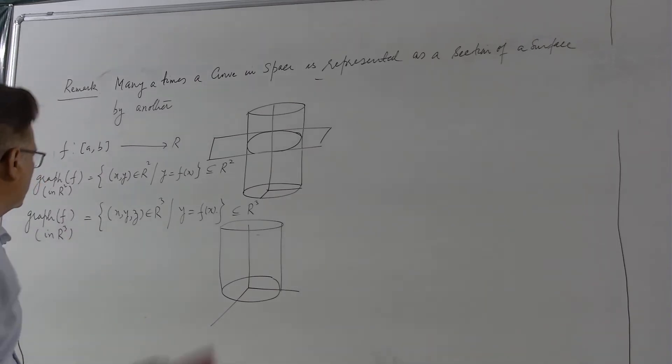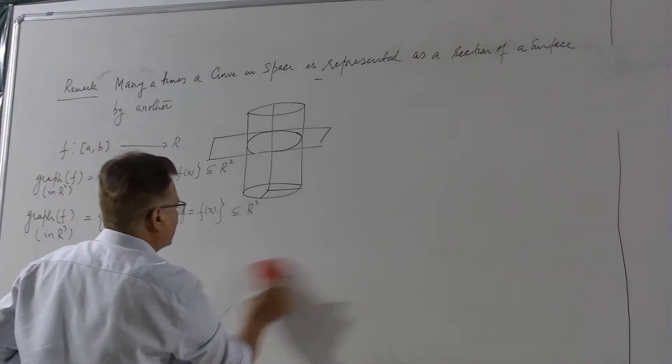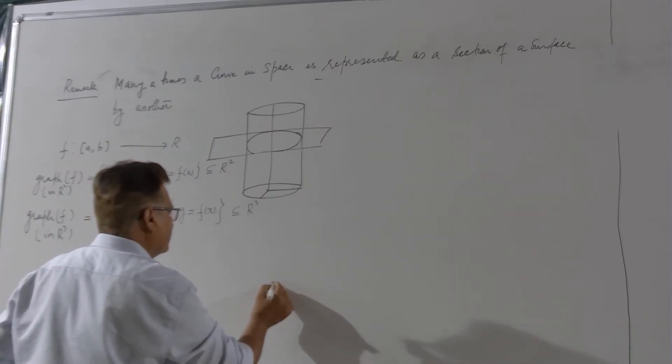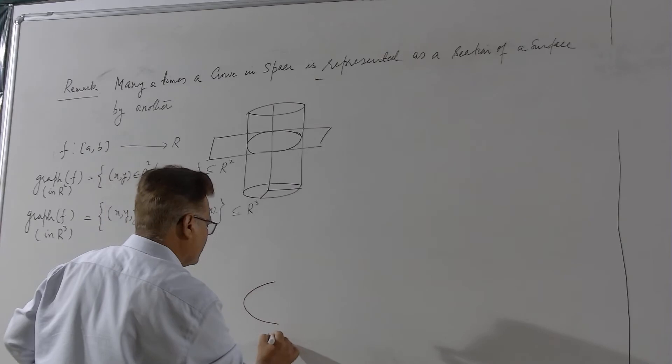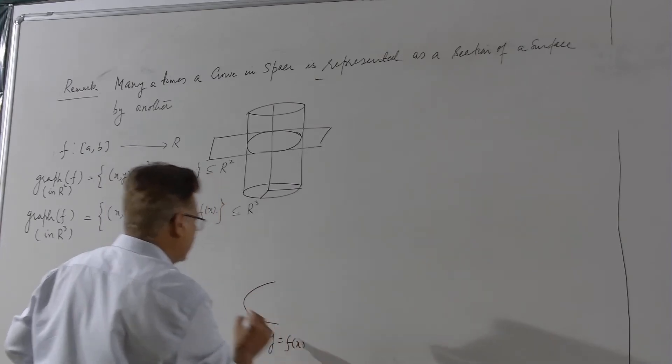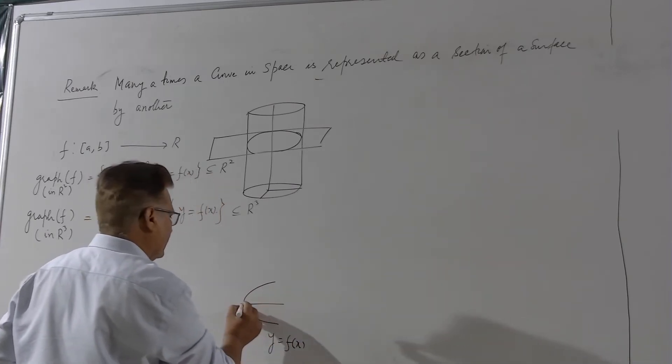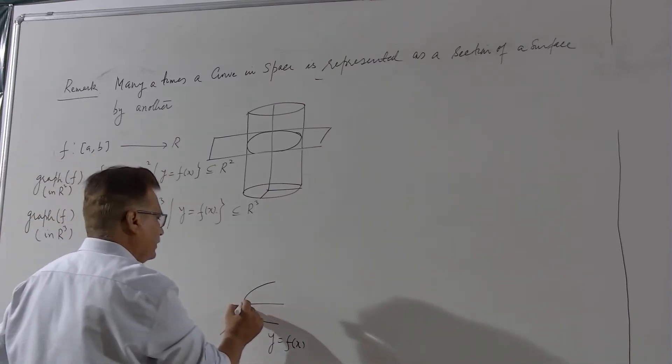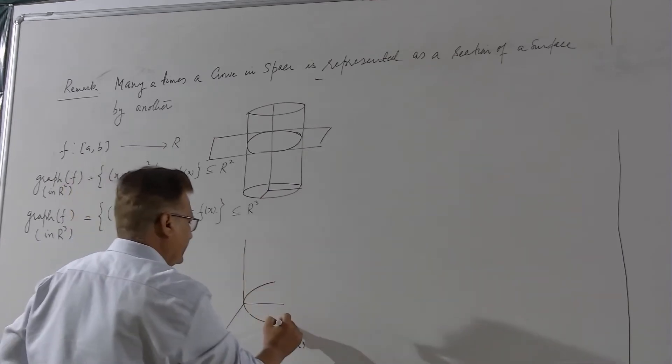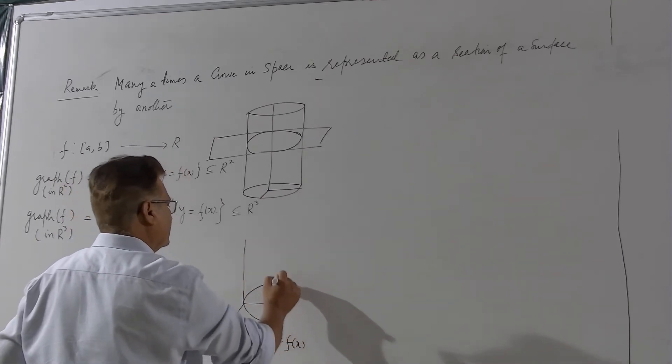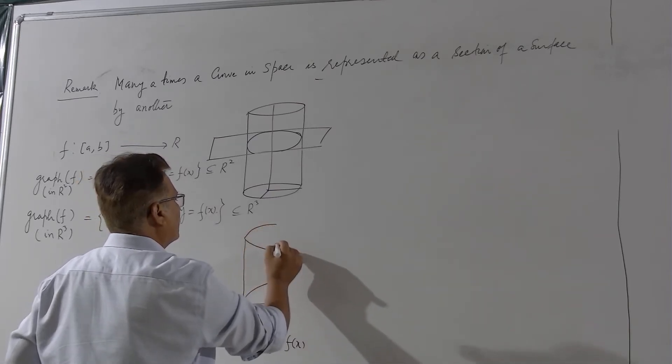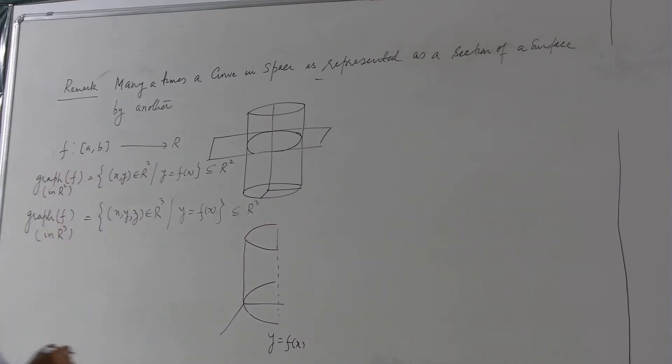For example, in xy plane I have this kind of a curve. This is y equal to f(x). This lies in the xy plane. Now you allow z to vary arbitrarily.